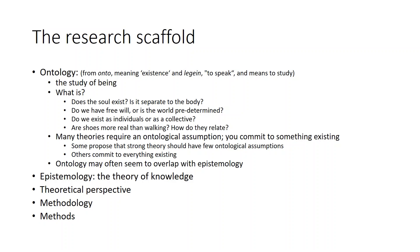Do we exist as individuals in the world, or are we a collective humankind? More simply: are shoes more real than walking and how do they relate? Many theories require an ontological assumption — you must commit to something existing in order to study it. Some propose that strong theory should have very few ontological assumptions, whereas others commit to everything in the world existing. Ontology may often seem to overlap with epistemology, which is why Crotty hasn't put it in his scaffold. I like to see it, particularly in PhDs, because I think it's important to have that higher-level philosophical consideration before moving on to your epistemology.